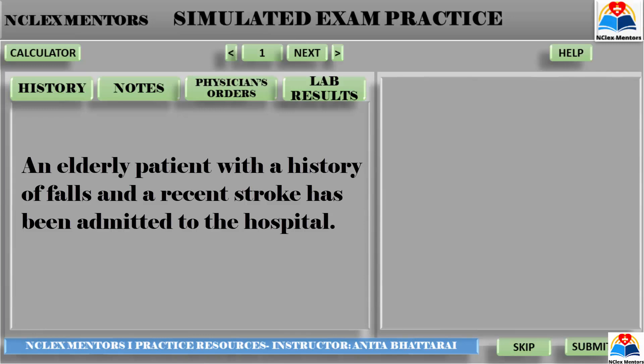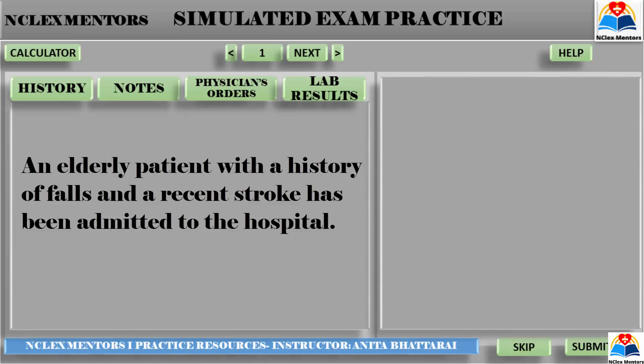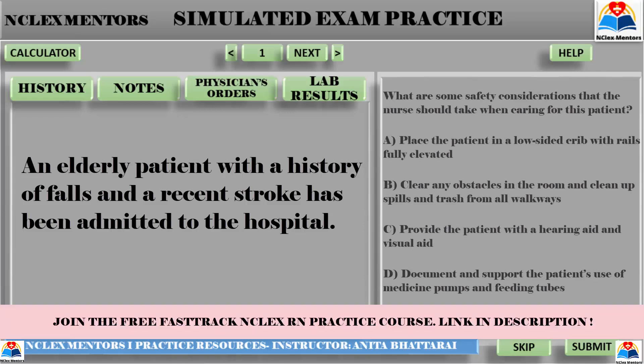An elderly patient with a history of falls and a recent stroke has been admitted to the hospital. What are some safety considerations that the nurse should take when caring for this patient? Your options are: A. Place the patient in a low-sided crib with rails fully elevated. B. Clear any obstacles in the room and clean up spills and trash from all walkways. C. Provide the patient with a hearing aid and visual aid. D. Document and support the patient's use of medicine pumps and feeding tubes.